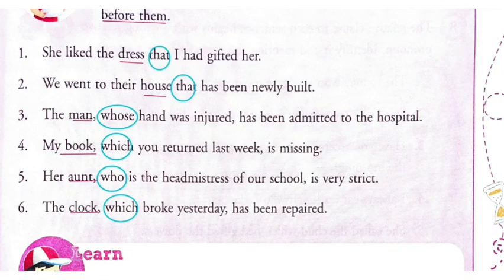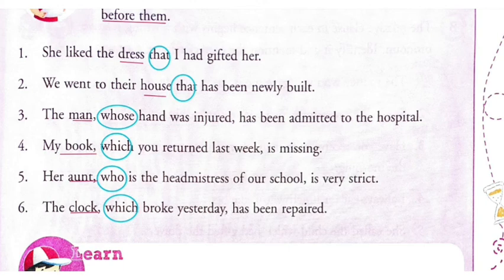'She liked the dress that I gifted her' — here 'she liked the dress' is one independent part, and 'that I had gifted her' is the relative part. It starts with the relative pronoun 'that', so this is called a relative clause. 'Dress' is the noun, and 'that' relates the next part to it.